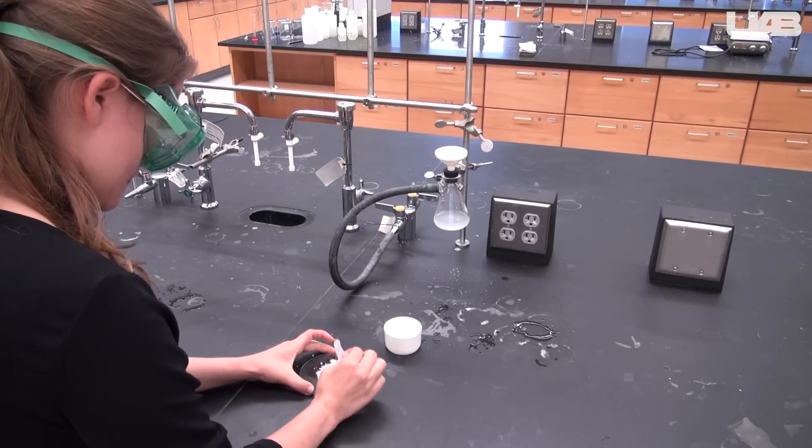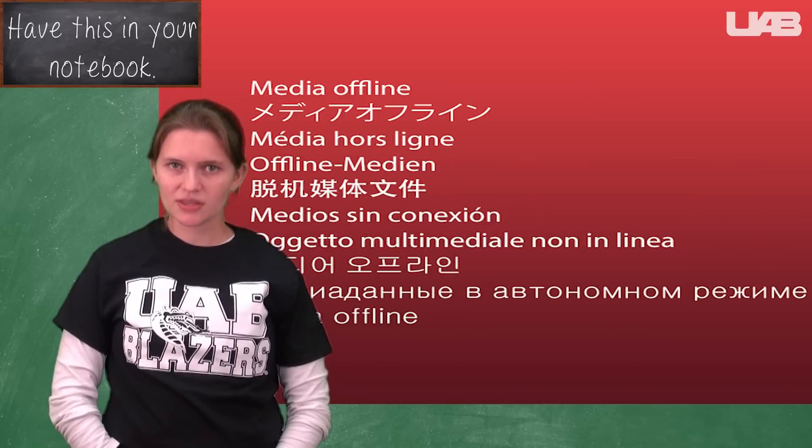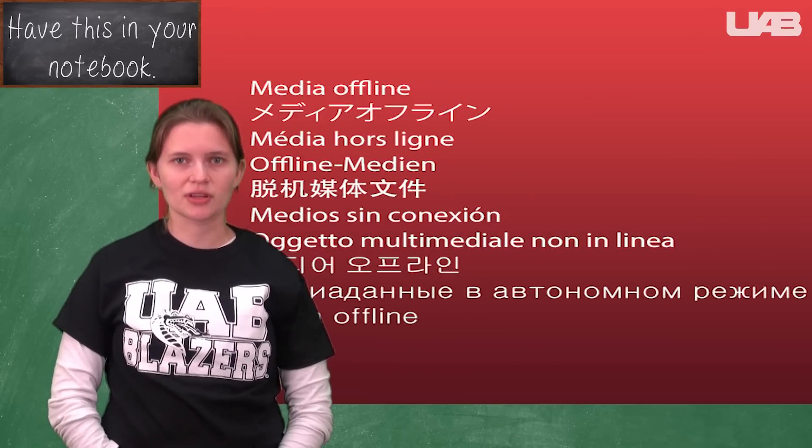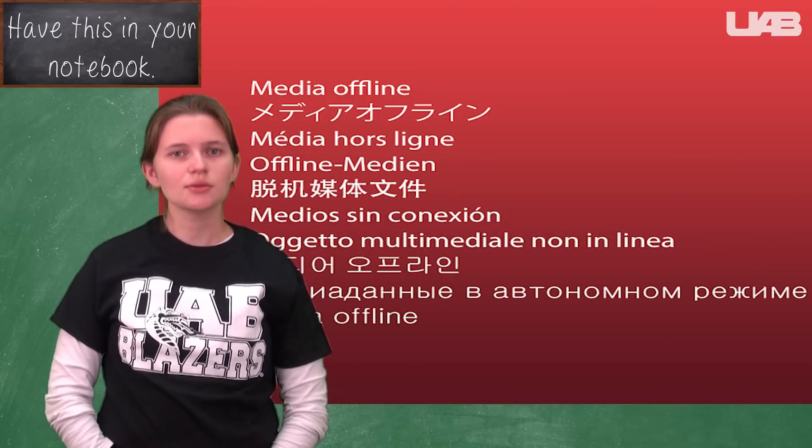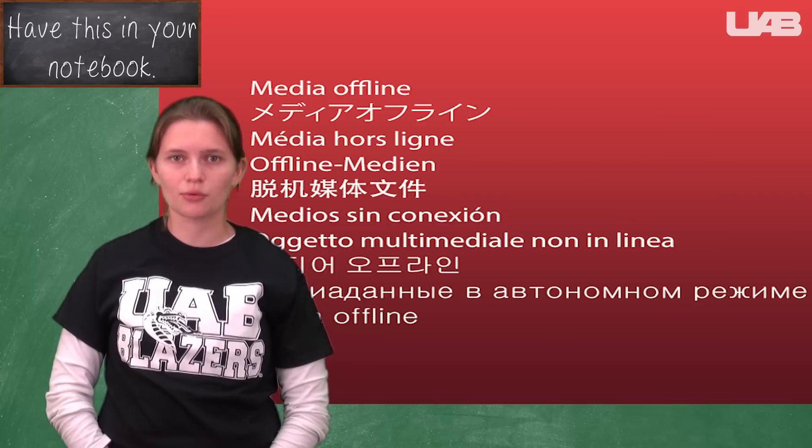Once the sample is dry, determine the mass of the crystals and record it in your notebook. Determine the percent yield by following the formula in the front of your lab manual. You will use this aspirin to perform tests both this week and next, so make sure you don't throw it away.